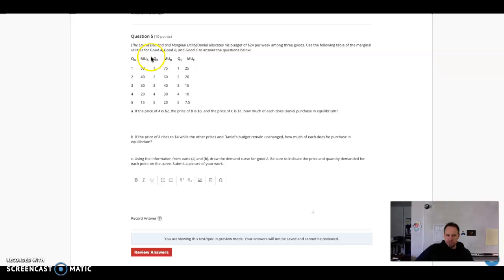We've got good A, good B, and good C - three different goods. We have a budget of $24 per week to spend on these three goods. Then we have our marginal utility values for each. So good A, here's our marginal utility, and you can see that as we consume more, it diminishes. That's the law of diminishing marginal utility.